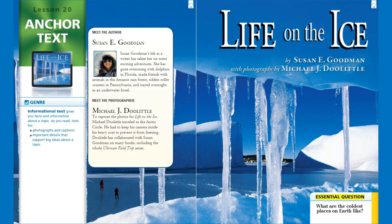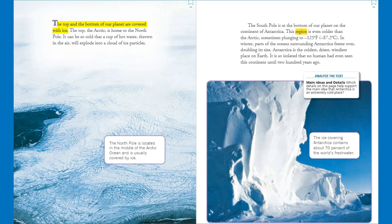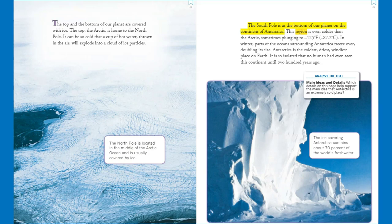As we read, let's think about our essential question: what are the coldest places on earth like? The top and the bottom of our planet are covered with ice. The top, the Arctic, is home to the North Pole. It can be so cold that a cup of hot water thrown in the air will explode into a cloud of ice particles. The North Pole is located in the middle of the Arctic Ocean and is usually covered by ice.